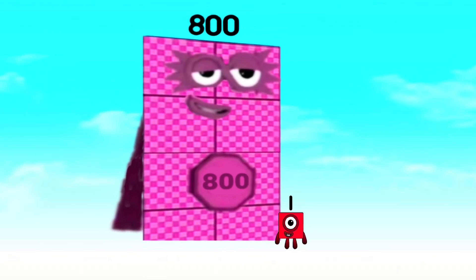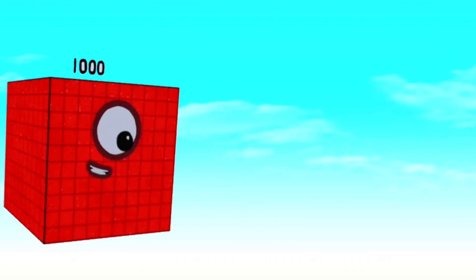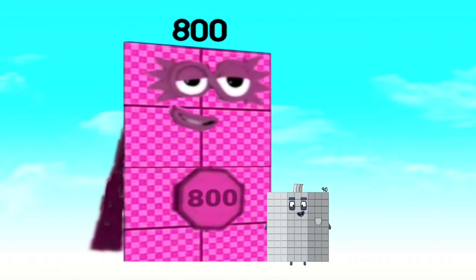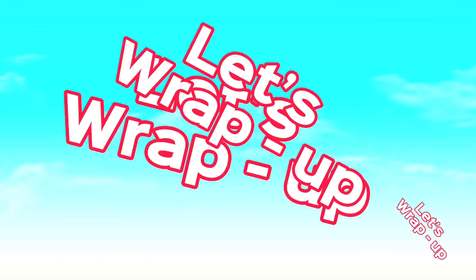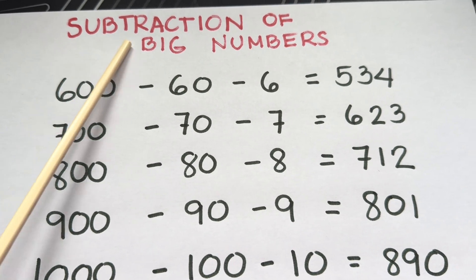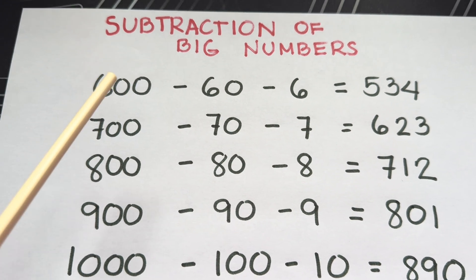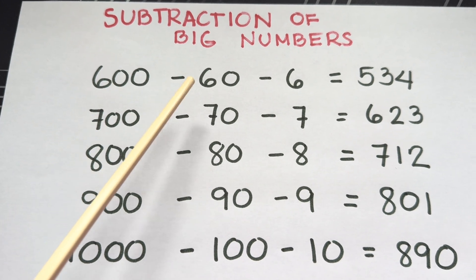801. 1000 minus 100 minus 10 equals 890. Let's wrap up Subtraction of Big Numbers. 600 minus...